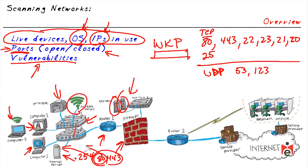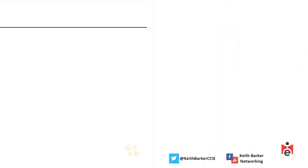If port 80 is open and we further determine it's running a specific version — for example, an older version of IIS or a specific version of Apache — and through that process we discover a machine is running a web server version that has known vulnerabilities, that absolutely could be a potential attack target.